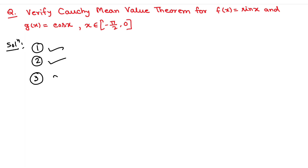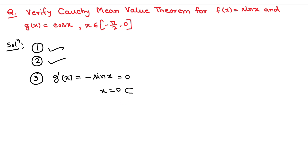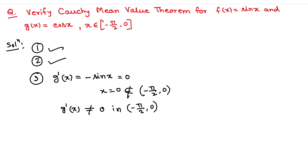For the third condition, g'(x) = −sin x, and the condition requires g'(x) ≠ 0 in the open interval (−π/2, 0). Now sin x = 0 when x = 0. But x = 0 does not belong to the open interval (−π/2, 0). So g'(x) ≠ 0 in the open interval (−π/2, 0), since it is zero only at x = 0 which is not in the interval.